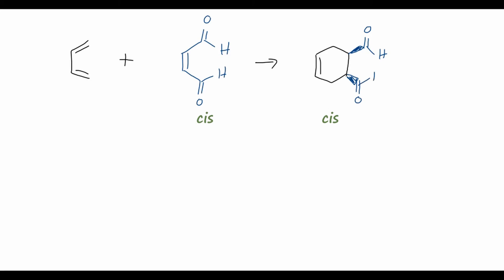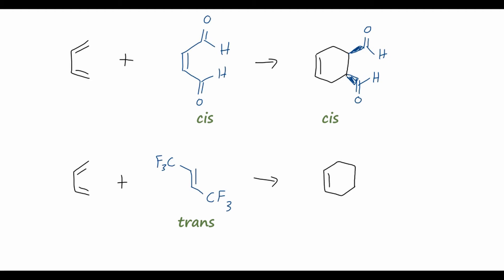Next, a similar reaction with the same 1,3-butadiene reacted with a substituted alkene having two trifluoromethyl groups arranged trans on the alkene. When combined at elevated temperature, we again get the cyclohexene backbone, and because these groups are trans on the dienophile, they will be arranged trans on the final ring. We should also note that because this compound is optically active, we will also make the enantiomer, where the configuration at both stereocenters has been flipped.